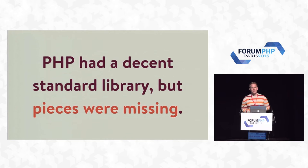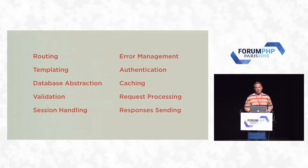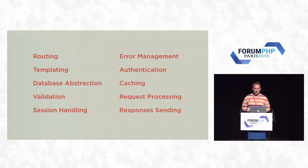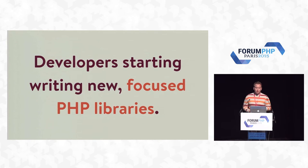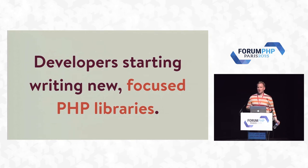PHP became a career for many of us and we started finding ways to write code better and faster. At that time, PHP had a decent standard library, but there were a lot of pieces missing — things like routing, templating, database abstraction, error management, caching, session handling, and validation. Developers started writing new focused PHP libraries. I still remember the first vendor package I pulled in — a templating library by a guy named Paul Jones. I was so amazed: I could pull it into my project and it just worked. It also introduced me to model-view-controller for the first time, probably around 2000.